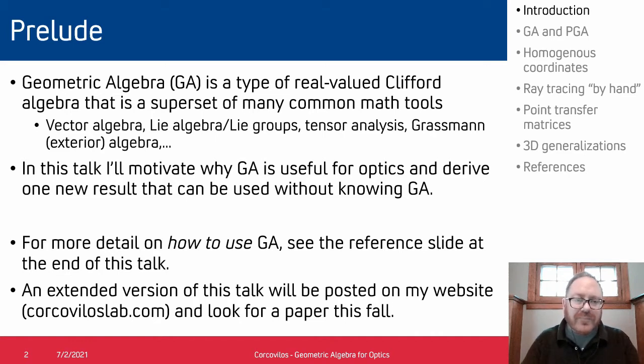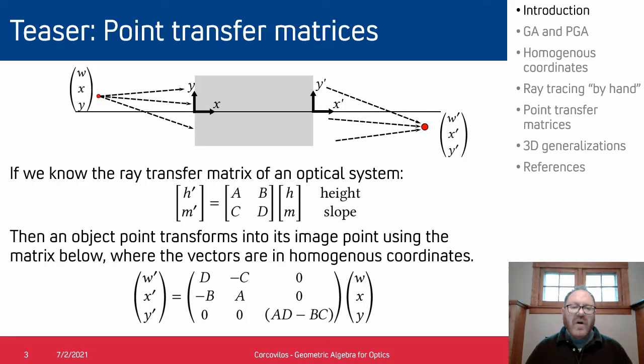And for an extended version of this talk you can look at my website here. To give you an idea where we're going, at the end of the talk I'll derive a point transfer matrix that takes a point in the object space of an optical system and transforms it into the corresponding point in the image space.